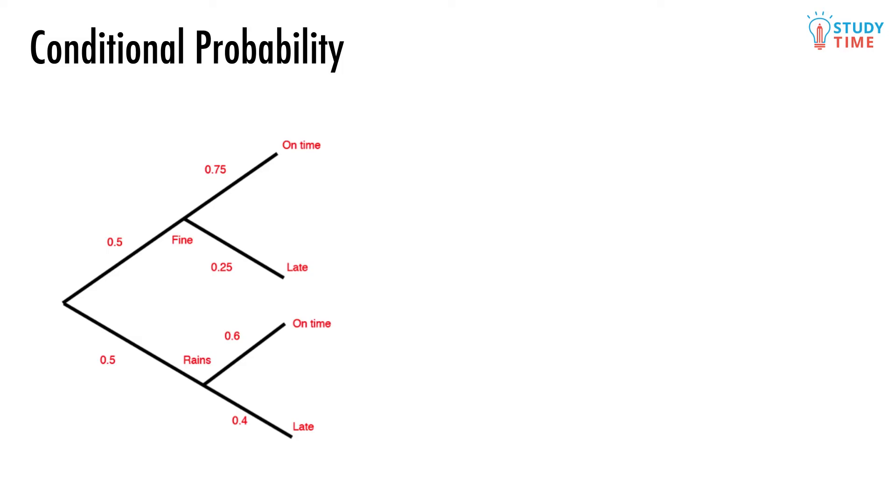There's a special kind of probability which is called conditional probability. Questions that are about conditional probability will pretty much always begin with 'given that,' and so they're easy to spot. The idea behind conditional probability is that we want to know the probability of something given that something else happens. The probability of B given A equals the probability of A and B divided by the probability of A.